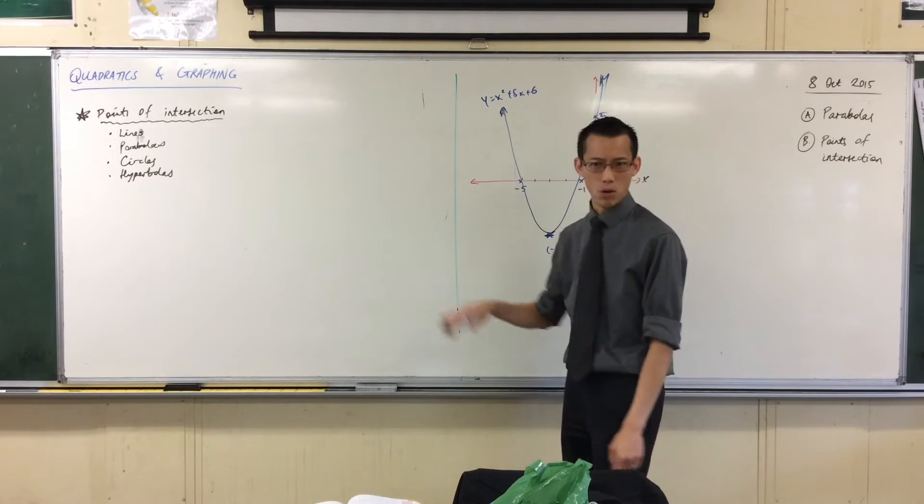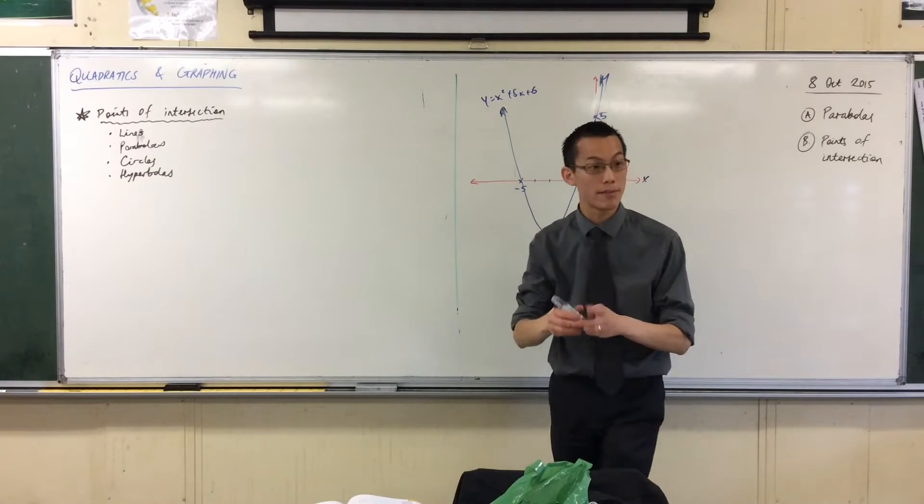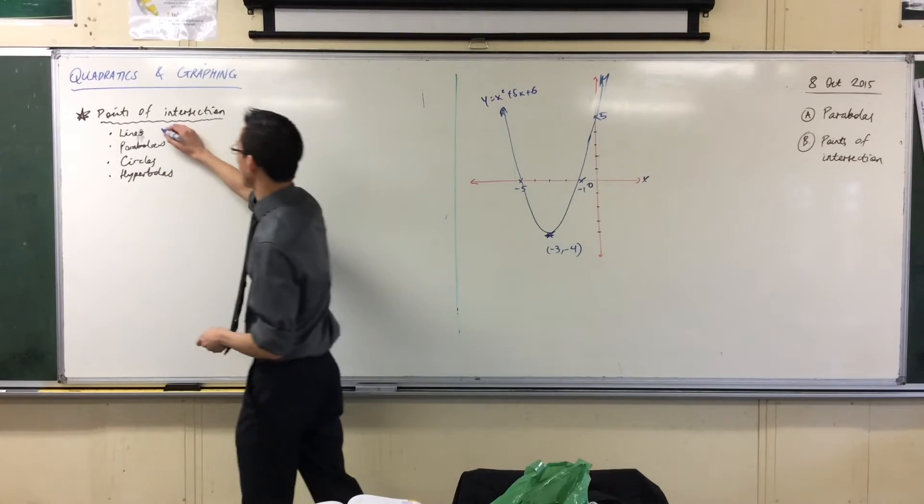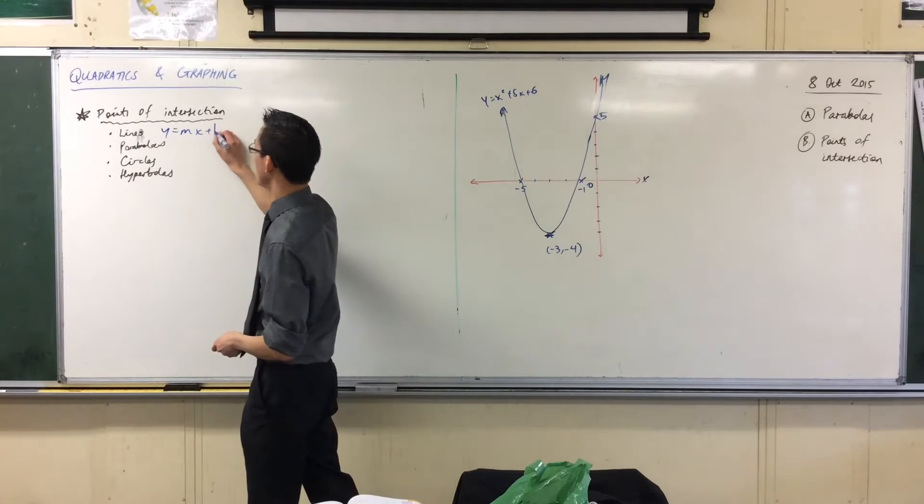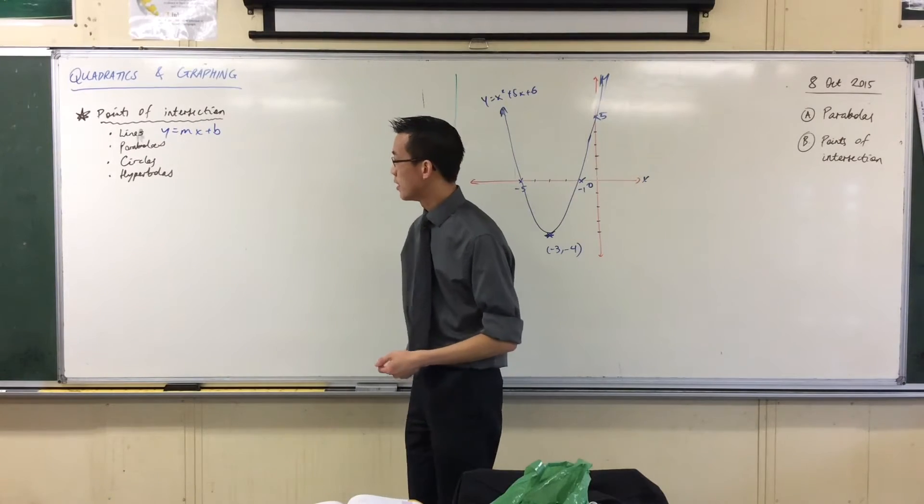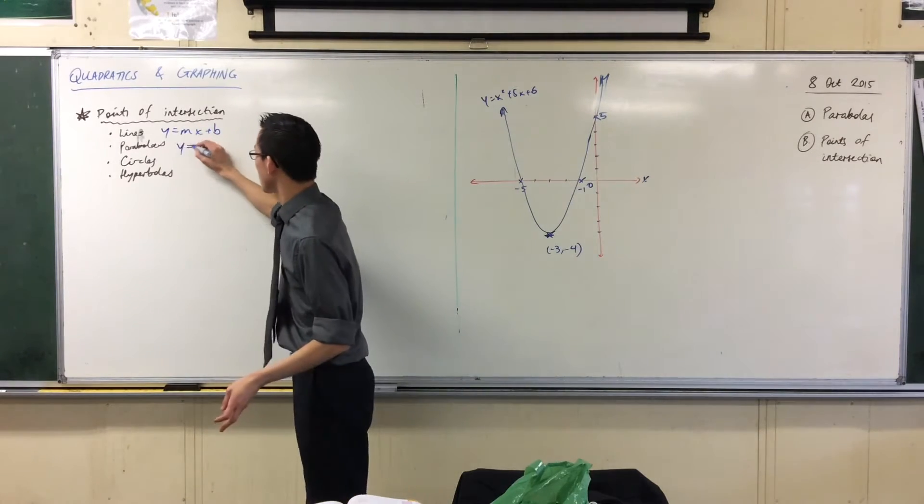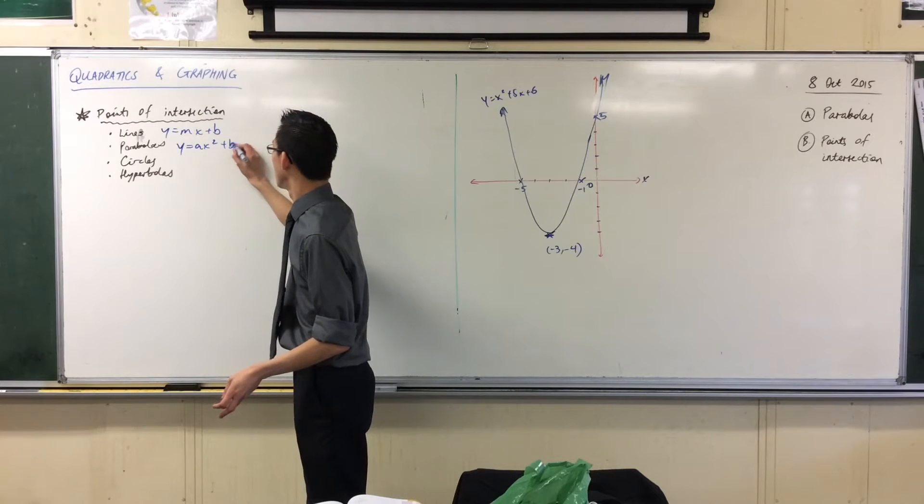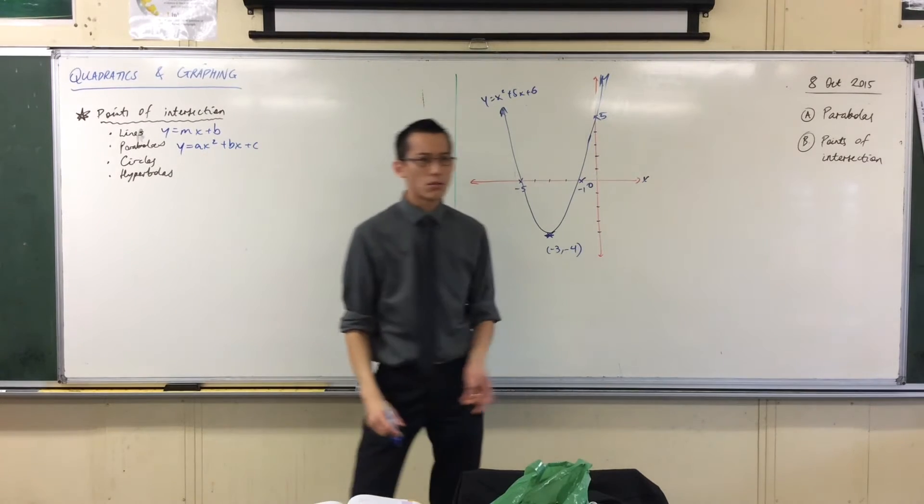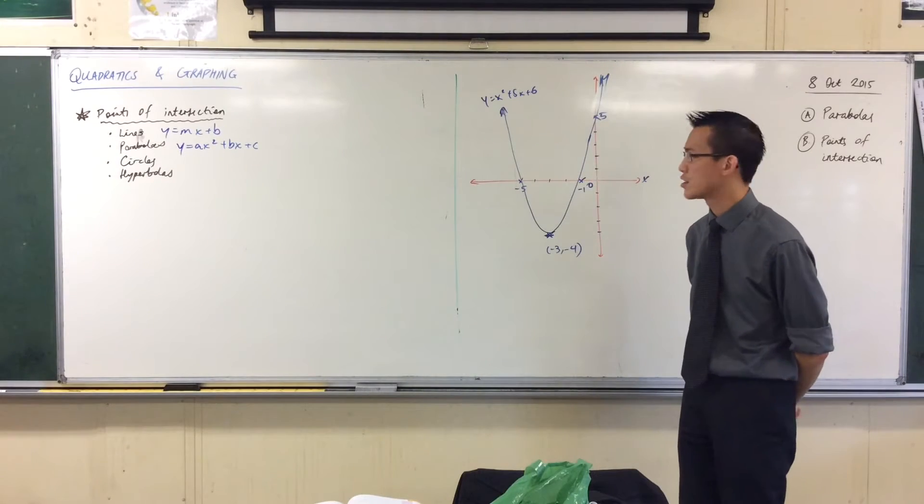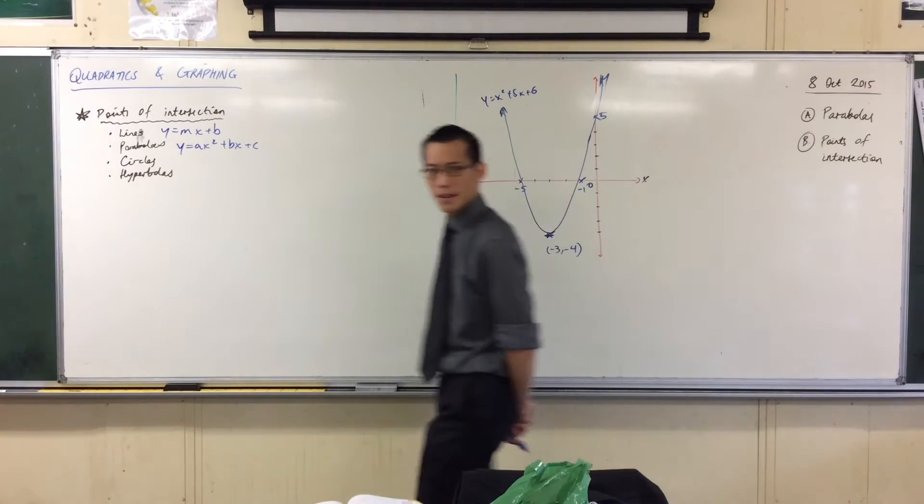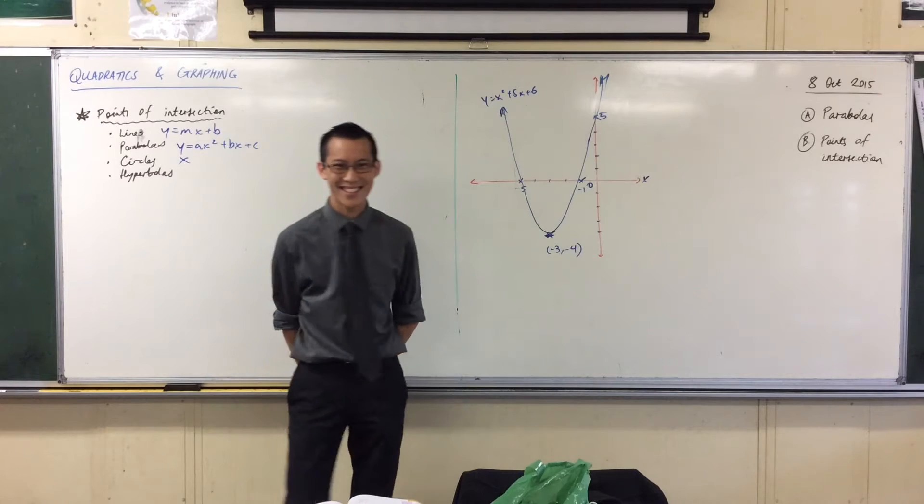Let's just quickly remember, as equations, what these roughly look like. Now the equation of a line, that'll be something like y equals mx plus b. We've seen those before. Parabolas, we just looked at those. Circles. What might be an example of the equation of a circle? I'll give you a clue. It'll start with an x usually.